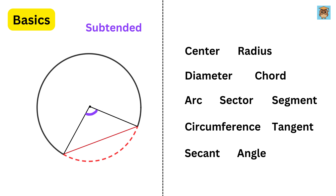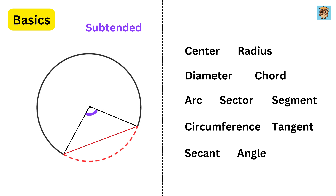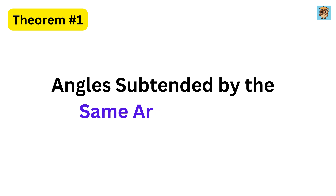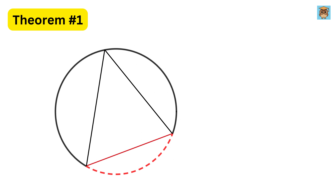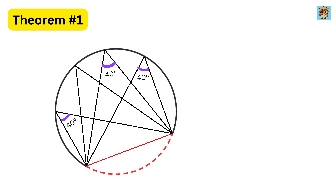This completes the basic naming of a circle. Now, theorem number one: angles subtended by the same arc are equal. This means that if an arc subtends an angle at multiple points on the circle, all such angles are equal. So this angle is equal to this one, and this one as well. If I draw another angle like this one, it will be equal to all of these angles.